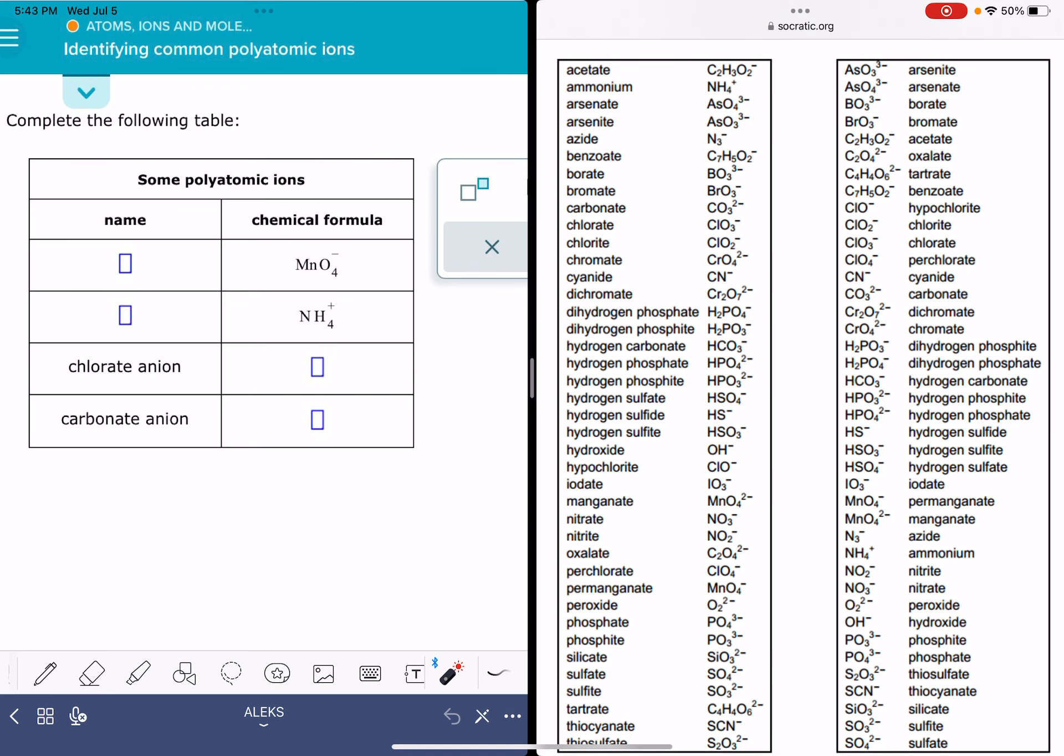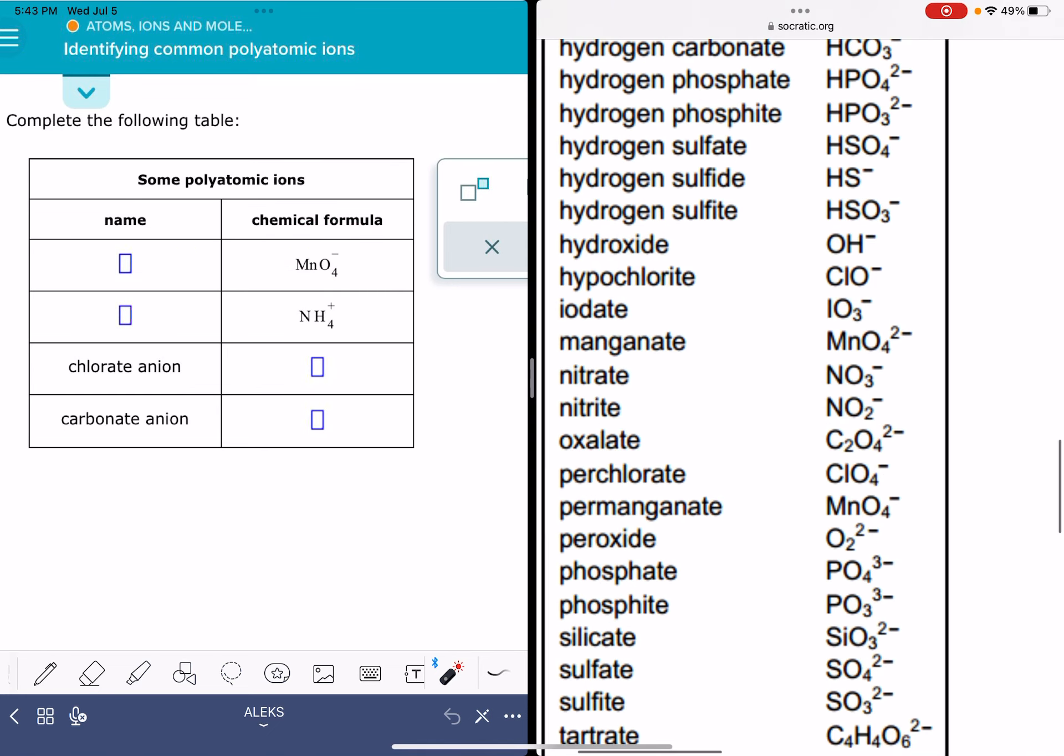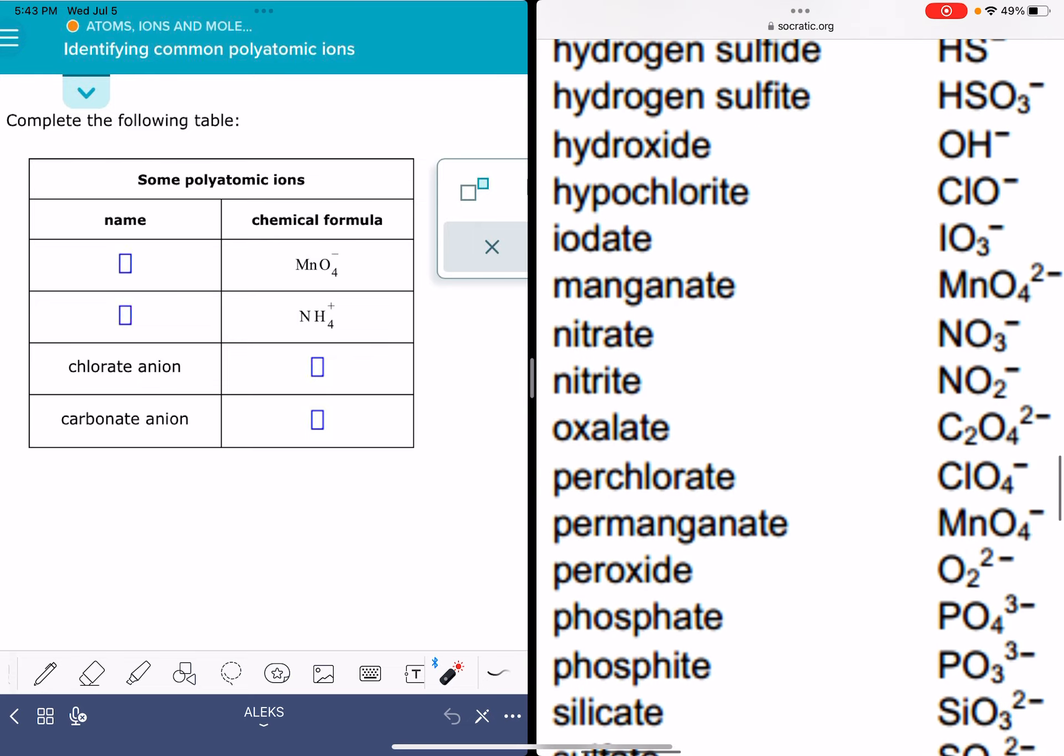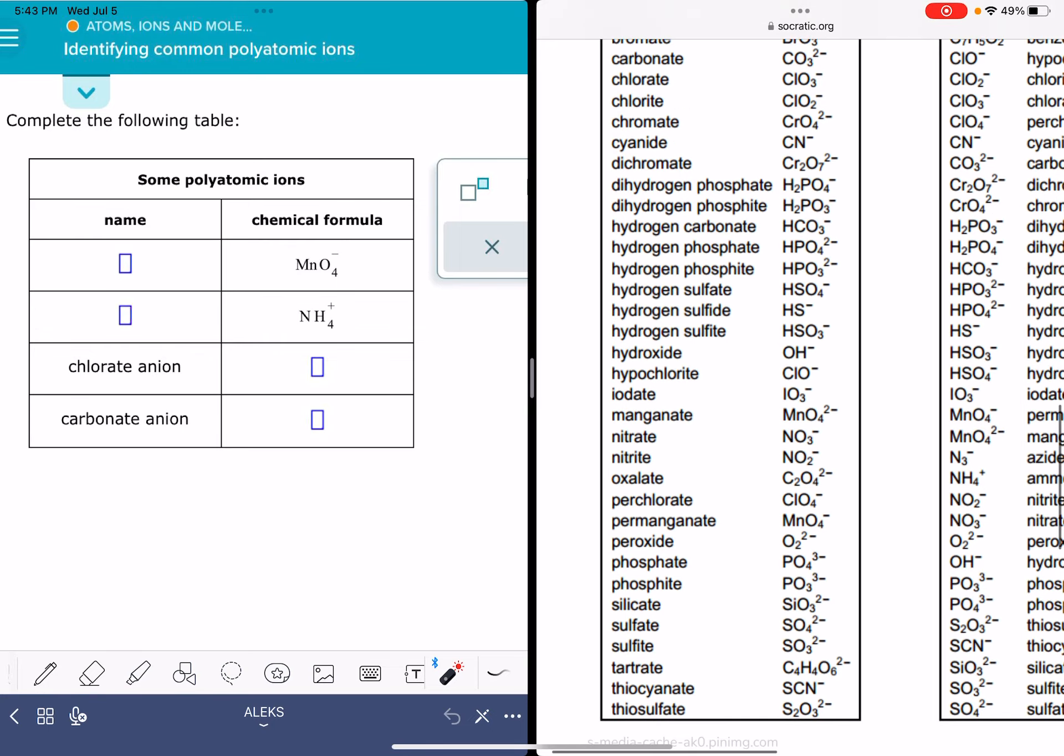So for when we're starting with the formula, looking for the name, I'm looking for MnO4. You need to make sure that you're paying attention, not just to the atoms, but also to the charges. There are a lot of polyatomic ions that have really similar formulas. So here is my MnO4.